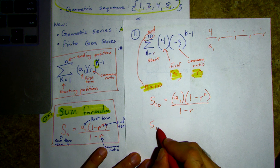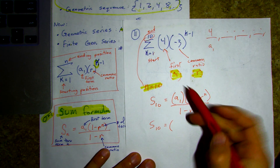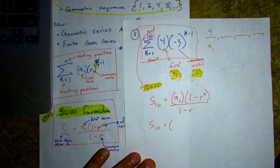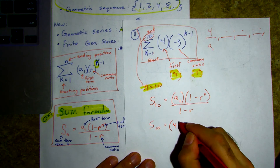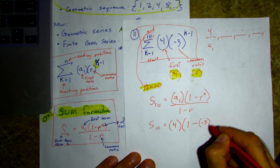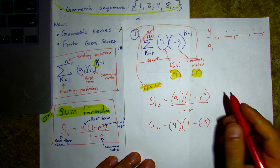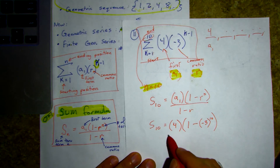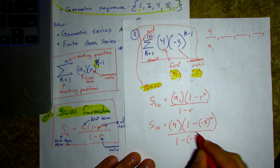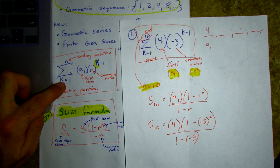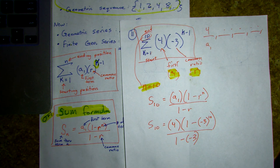S sub 10 — n is 10, so I'll keep that in mind. A sub 1 is 4 based on our template. So we get 4 times (1 minus negative 3 to the 10th) over (1 minus negative 3). It's all about looking here, pulling out the information you need, putting it into the sum formula, and finding what they all add up to — that's it.